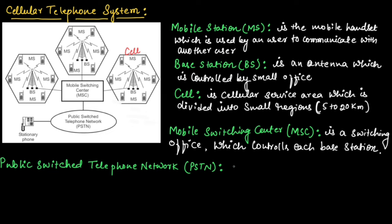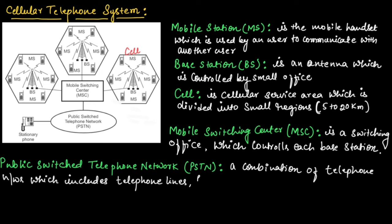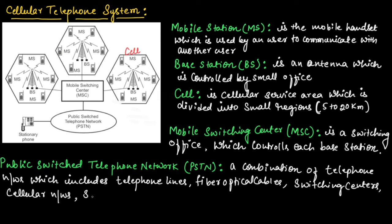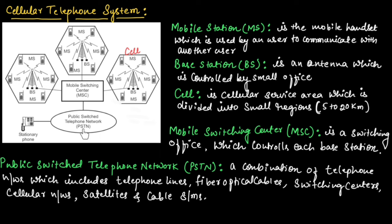A public switch telephone network (PSTN) is a combination of telephone networks used worldwide, which includes telephone lines, fiber optical cables, switching centers, cellular networks, satellite and cable systems. This PSTN is in turn connected to stationary phones, which are used for communication.